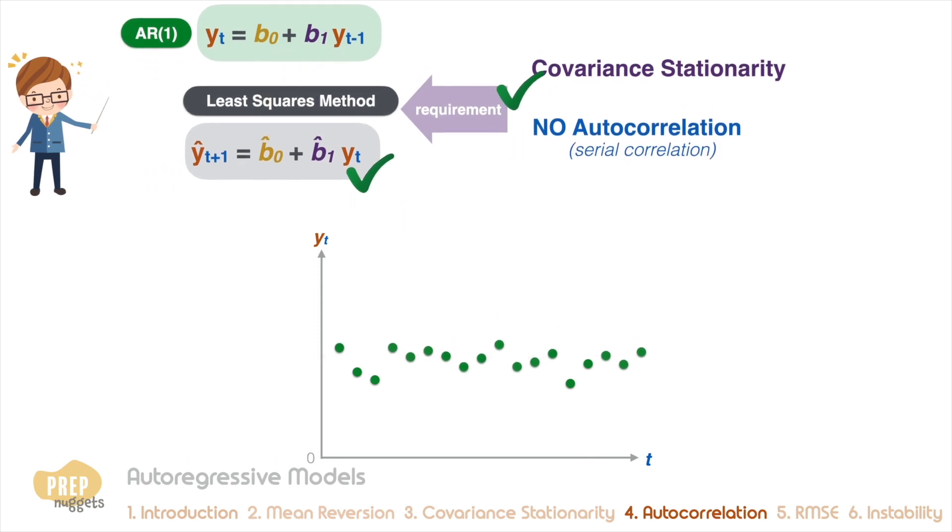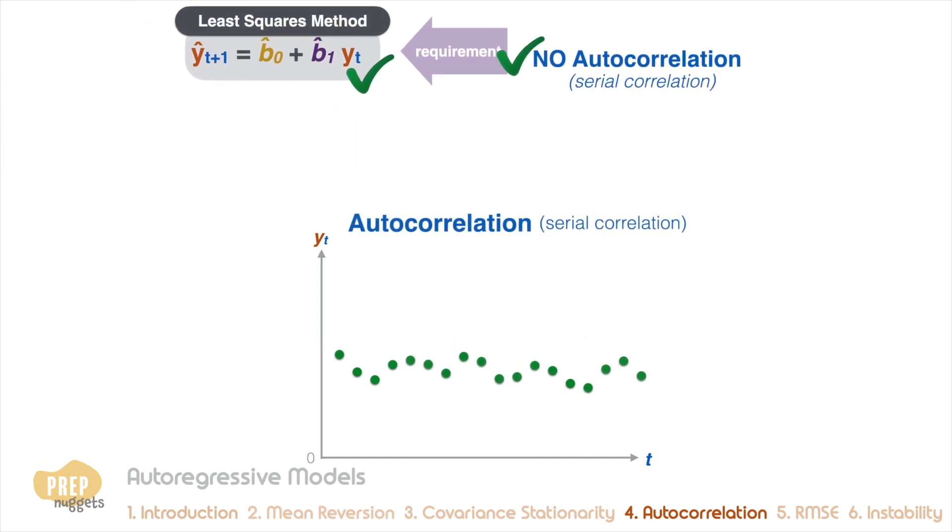We've learned in the last topic that serial correlation, also known as autocorrelation, is the phenomenon where residuals are positively or negatively correlated. When the residuals are correlated, standard errors of coefficients are unreliable, so hypothesis tests on coefficients can result in unreliable conclusions.